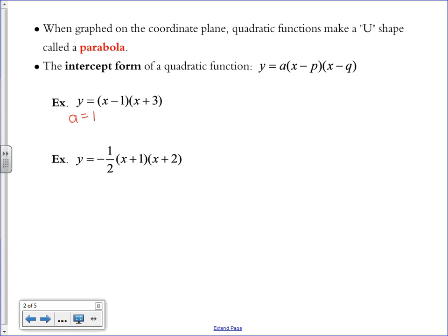If there is no number in front of the parentheses, that means A is 1, which is a positive value, and it tells us that our parabola is going to be opening upward.